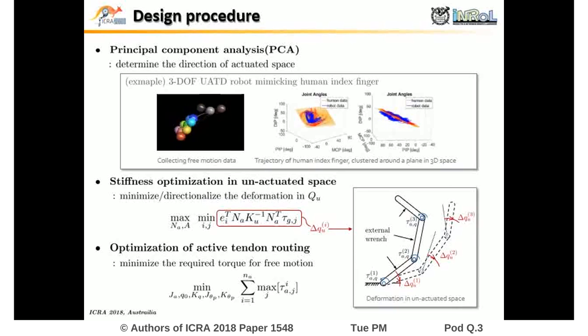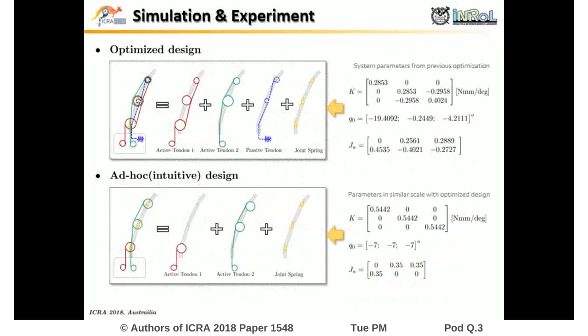For that, we follow the design procedure shown here. We obtain the optimized design for UATD robot mimicking human index finger as shown.